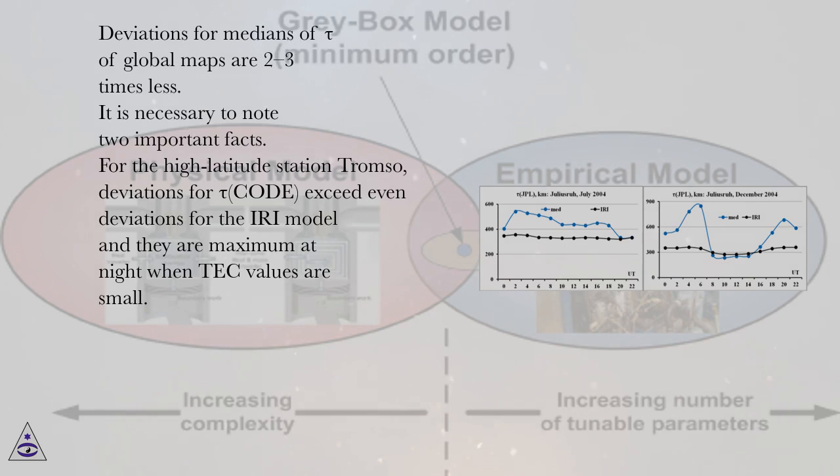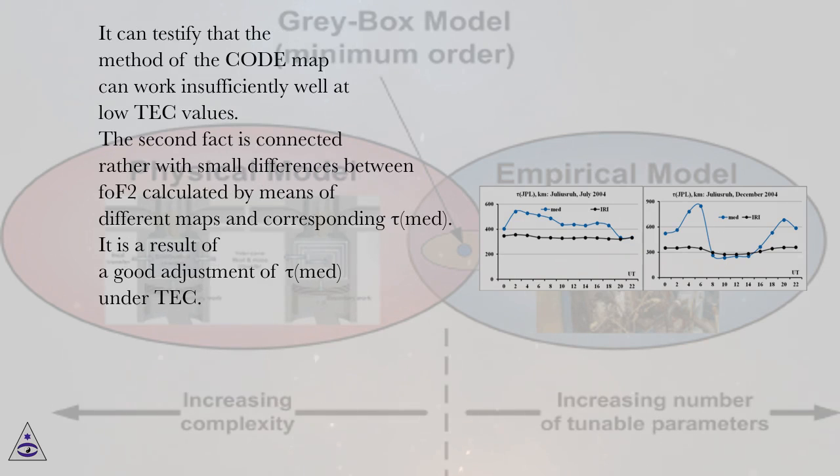For the high latitude station Tromso, deviations for tau CODE exceed even deviations for the IRI model and they are maximum at night when TEC values are small. It can testify that the method of the CODE map can work insufficiently well at low TEC values.